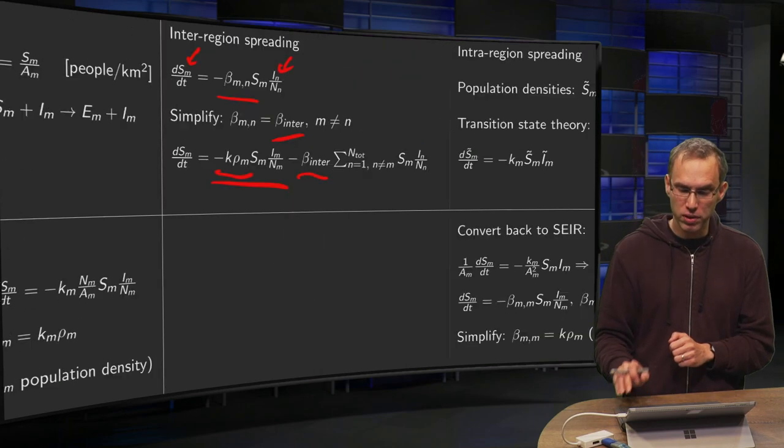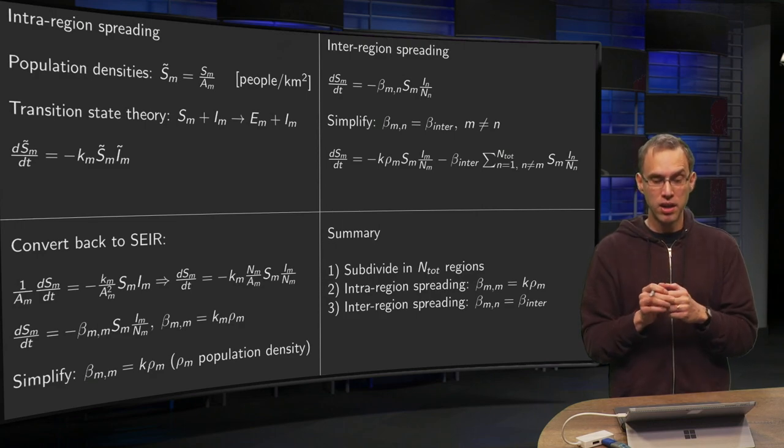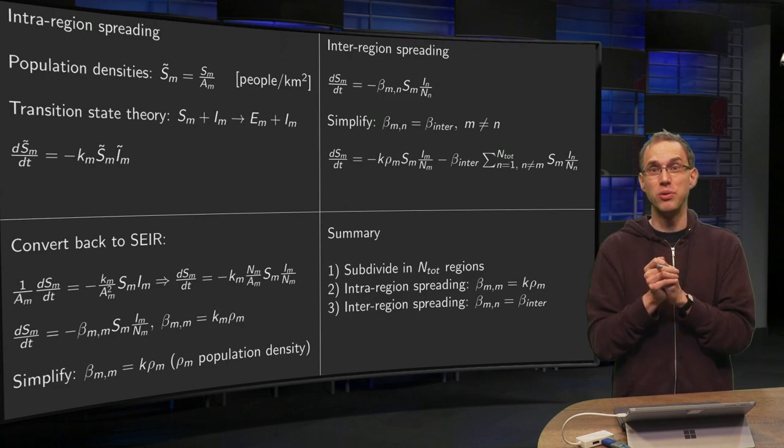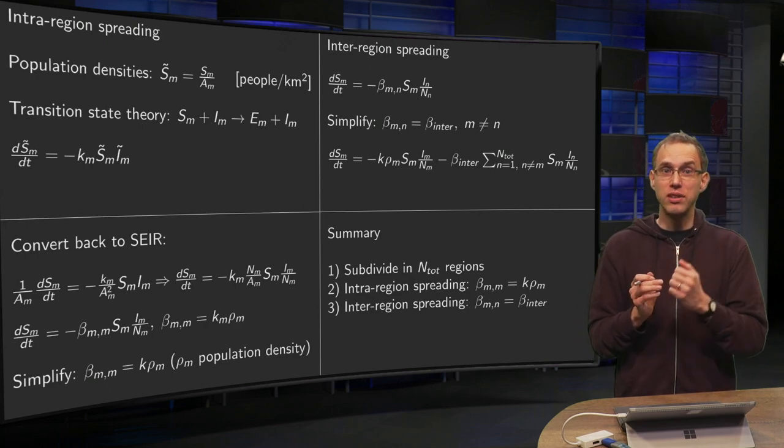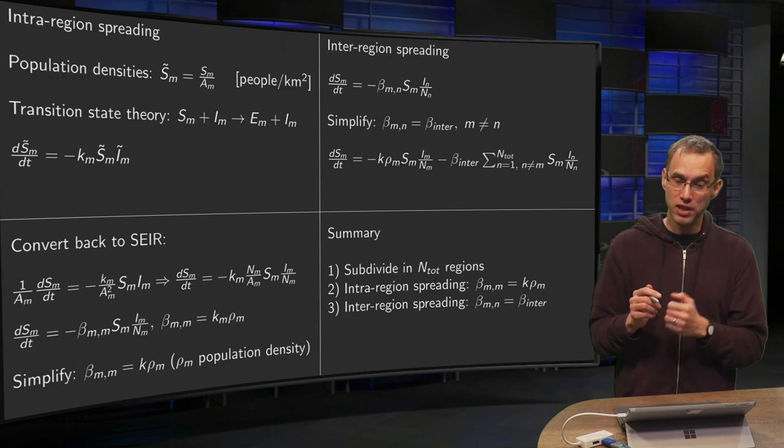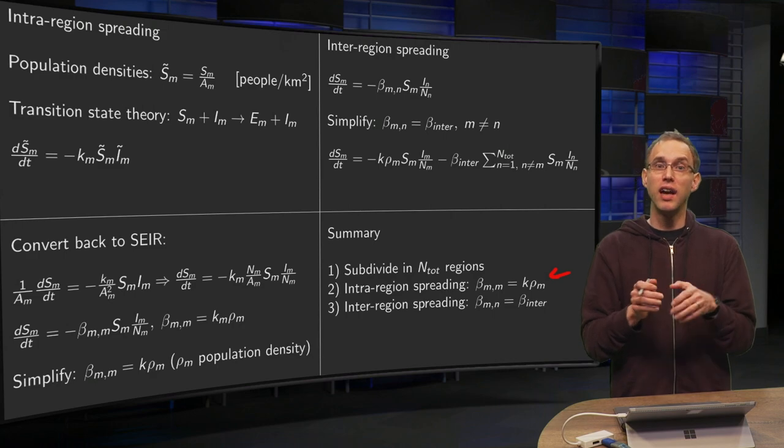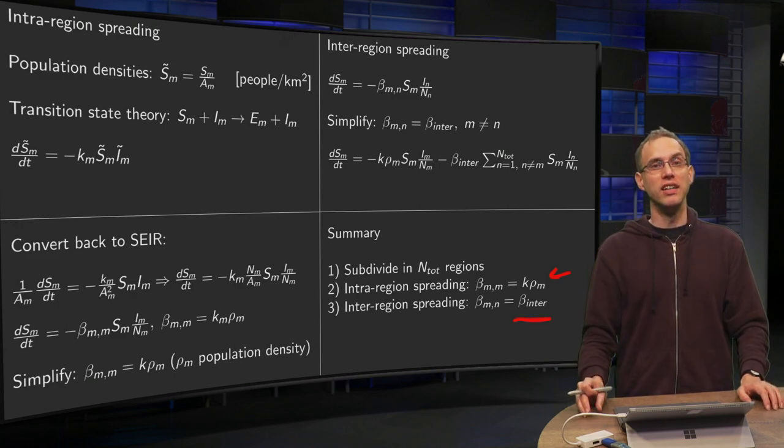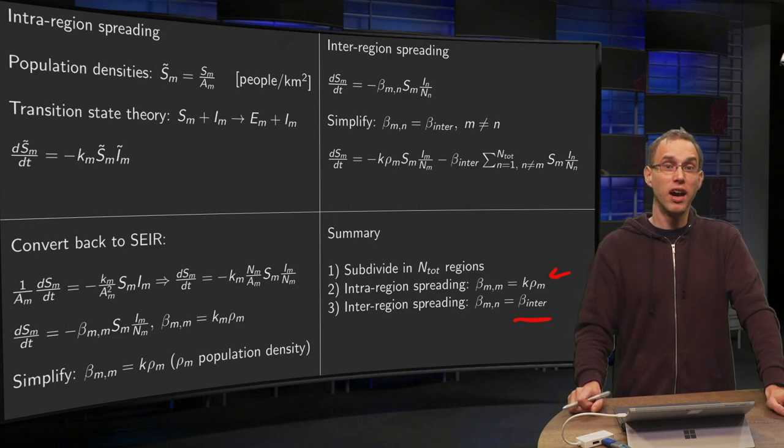So to summarize, what have you gotten? If you want to model spatial dependence of your beta, first of all, you have to subdivide your whole domain, your country or whatever you want to model, into a number of regions in a sensible way. Then you really need to model your intra-region spreading differently from your inter-region spreading. So for the intra-region spreading, a first idea would be to take the constant k times the density of the region. And a first idea for the inter-region spreading would be to take the beta coefficient as a constant. And in this way, you can still in a relatively easy way incorporate spatial dependence in your SEIR model.